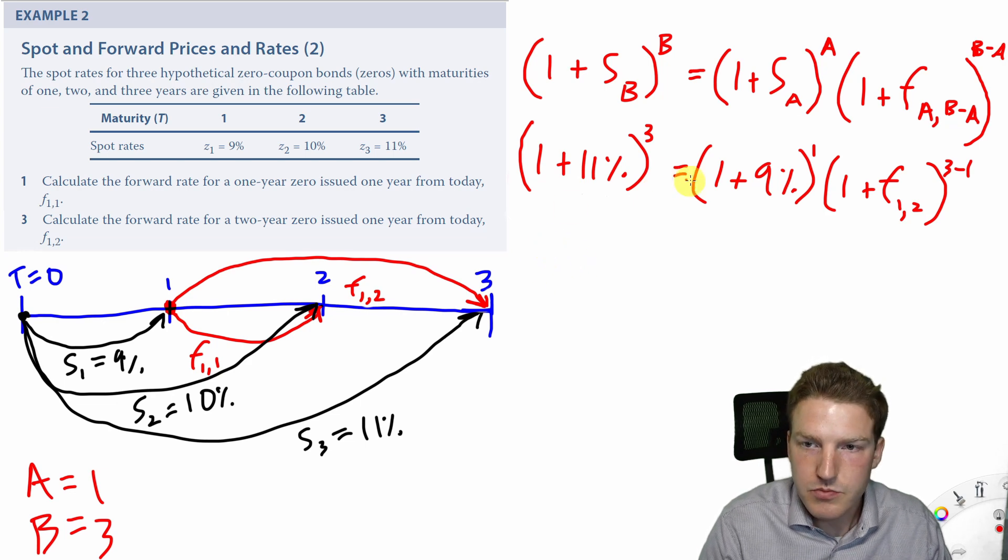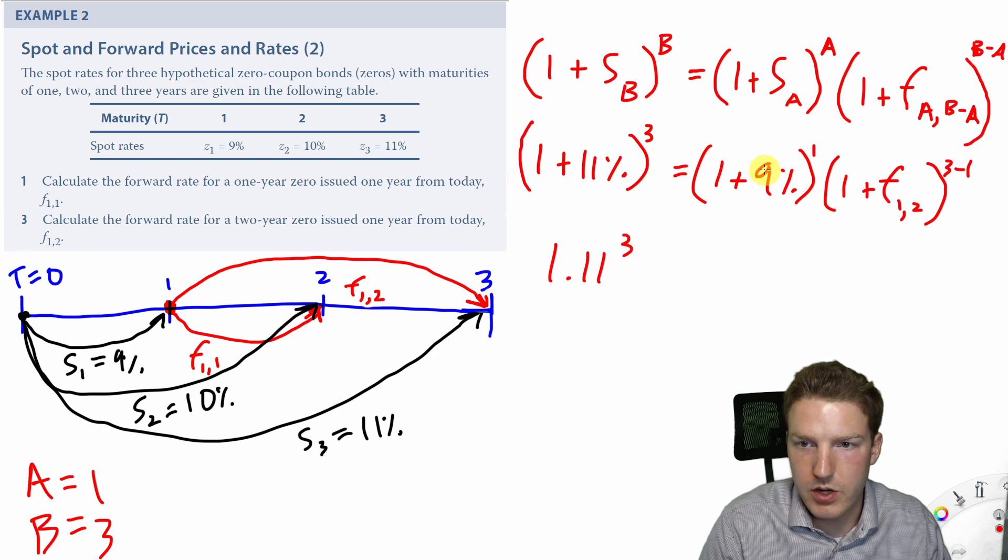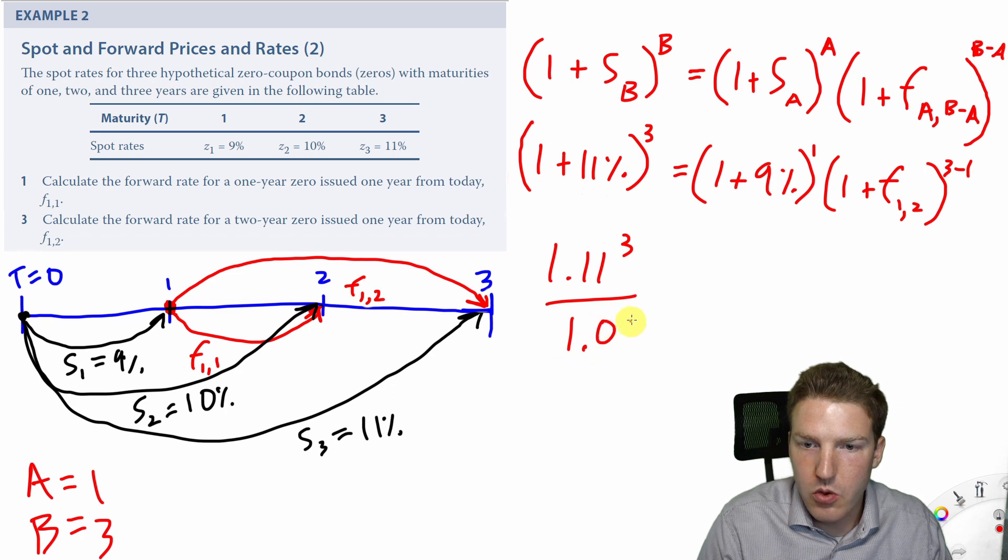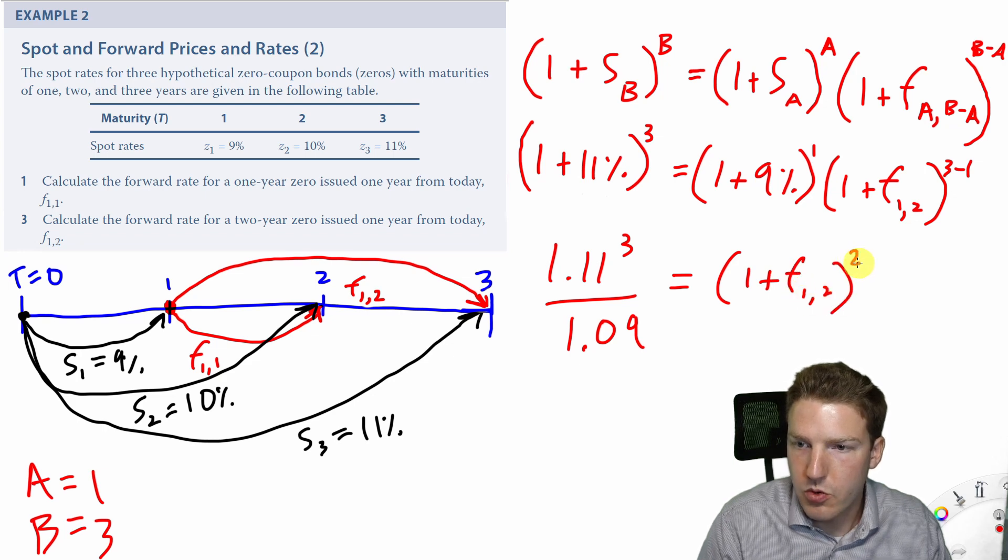So now we'll just solve for this. So 1.11 to the power of 3 divided by 1.09 is equal to 1 plus F1, 2 squared.